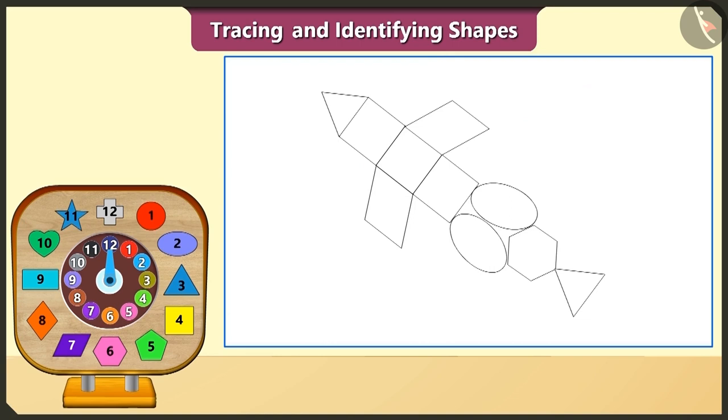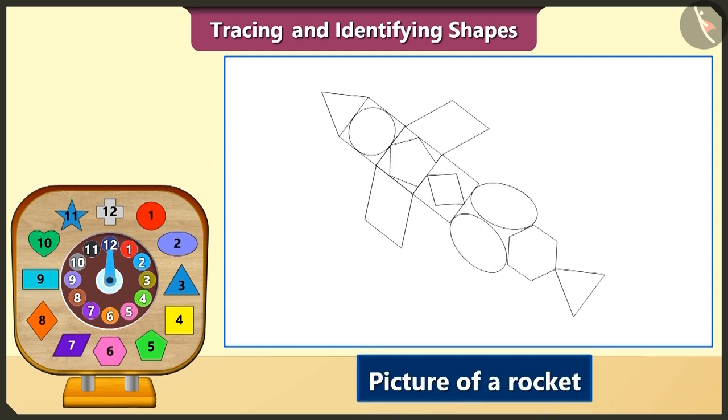Now look at these blocks. This is a circle, this is a pentagon and this is a rhombus. Now we will place these blocks in the three traced square shapes and trace them. Oh wow! This is a picture of rocket.